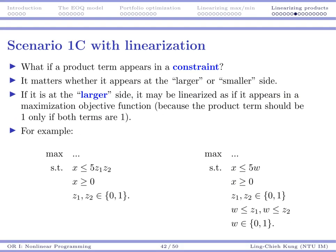So if one thing appears in the objective function, you know how to deal with that, 1a and 1b. Now we want to talk about constraints. For instance, what if a product term appears in a constraint? It depends on whether it appears at the larger side or the smaller side, very similar to our previous section.